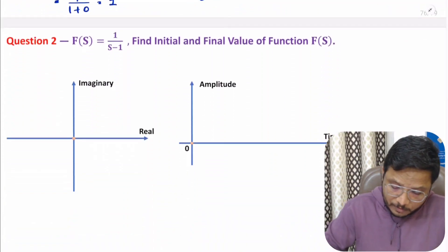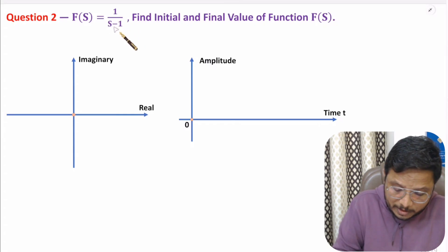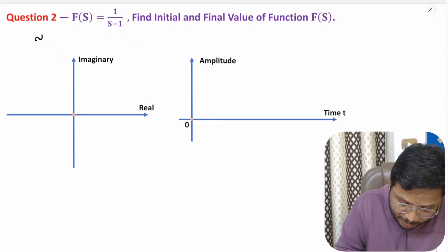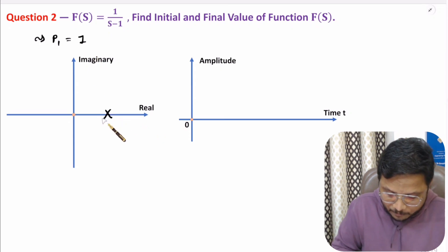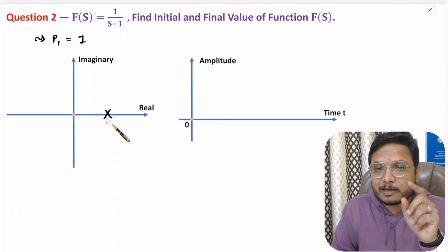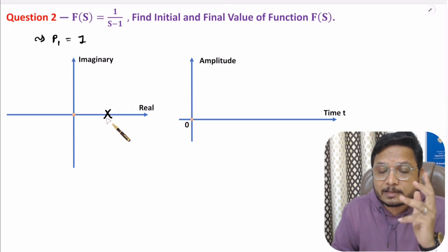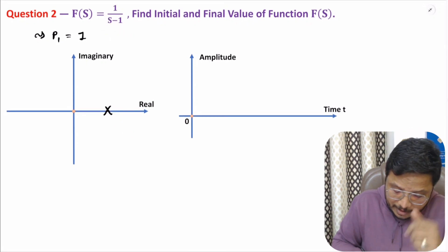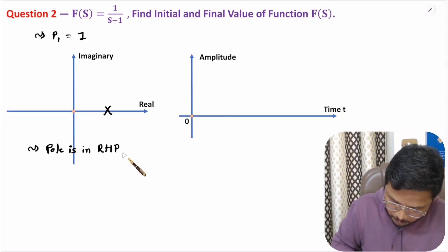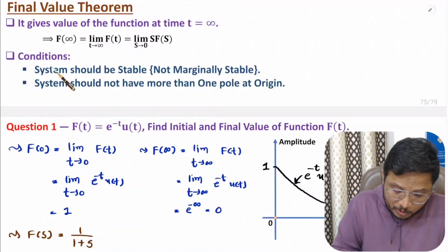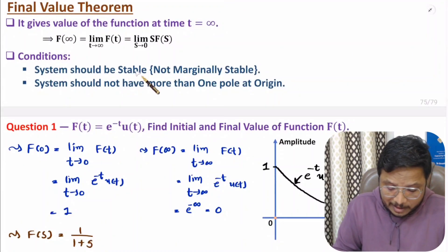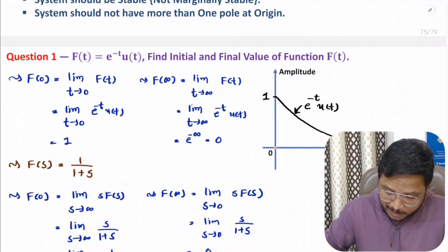In the second problem, we have the function F(s) = 1/(s−1). Observing this function, there is one pole at s equals 1. If we plot this pole in the s-plane, the real value is 1, so the pole appears in the right half plane. A pole in the right half plane means the system is unstable. For an unstable system, one cannot identify the final value — the condition states that for final value the system must be stable.